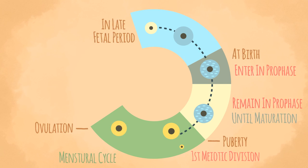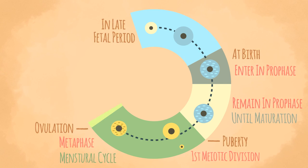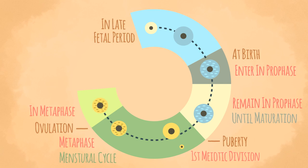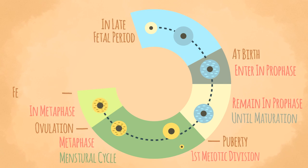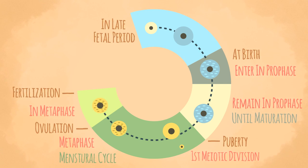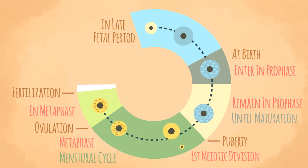The smaller cell is known as the first polar body. The secondary oocyte immediately enters the second meiotic cell division. Ovulation takes place while the oocyte is in metaphase. The secondary oocyte remains in the metaphase until fertilization occurs.